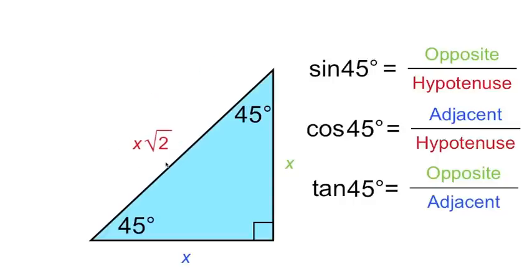So now we have enough information to evaluate all these trig functions at 45 degrees. Sine is opposite over hypotenuse, so that's x over x root 2. The x's in the numerator and denominator cancel, leaving us with 1 over root 2.